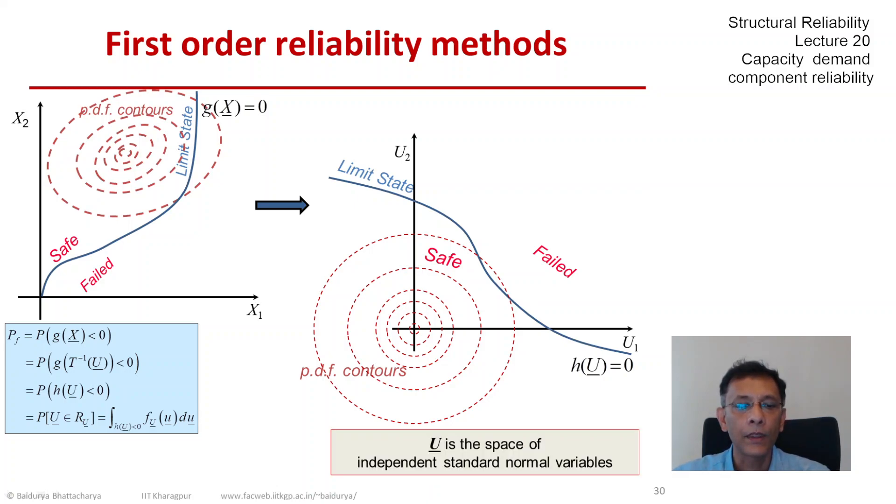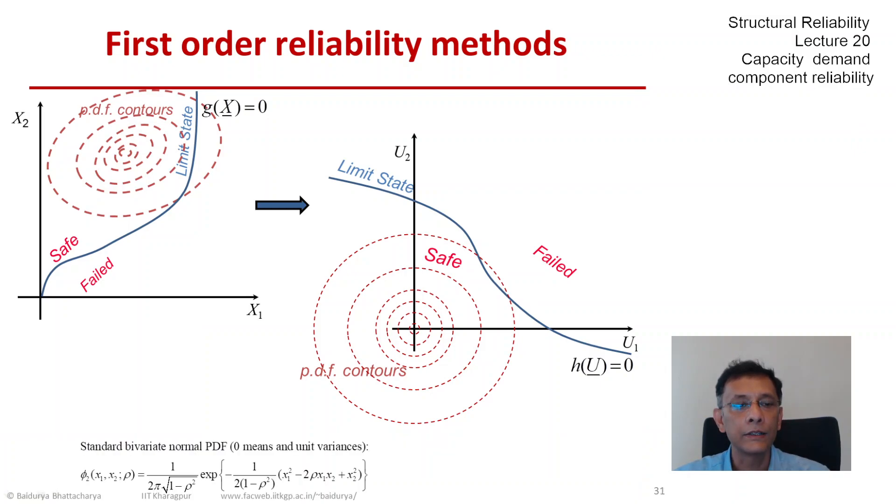Why are the pdf contours all concentric circles? That is actually quite easy to see. We have seen the joint normal density and the standard bivariate normal because we are talking about two random variables here.